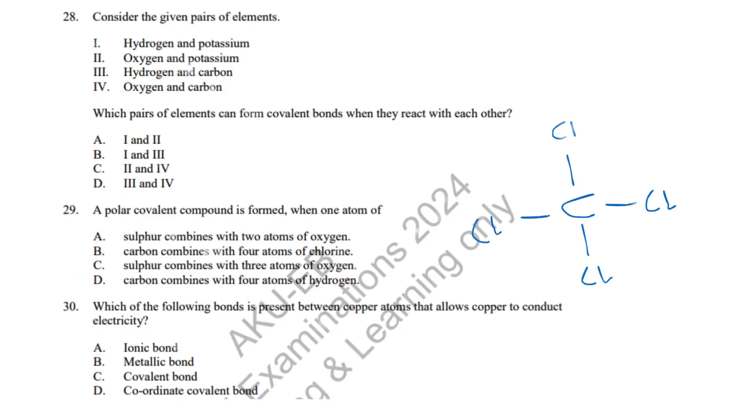Question 28: Covalent bonds form between non-metals like hydrogen-carbon and oxygen-carbon. Correct answer: D, III and IV. Question 29: Polar covalent bonds occur when there is an electronegativity difference, such as in CCl4. Correct answer: B, Carbon combines with 4 chlorine atoms.